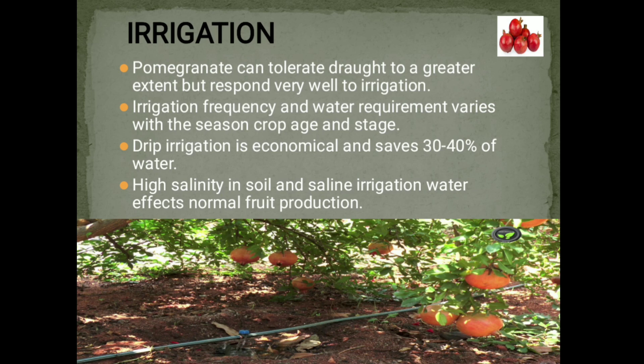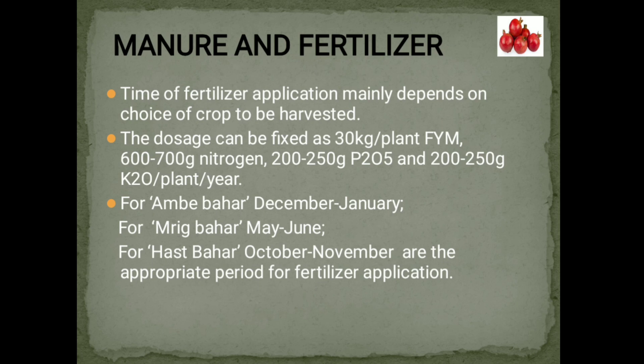Manure and Fertilizer. The time of fertilizer application mainly depends on the choice of crop to be harvested. The dosage can be fixed as 30 kg per plant FYM, 600–700 g Nitrogen, 200–250 g P2O5, and 200–250 g K2O per plant per year. For Ambe Bahar — December–January; for Mrig Bahar — May–June; for Hast Bahar — October–November are the appropriate periods for fertilizer application.